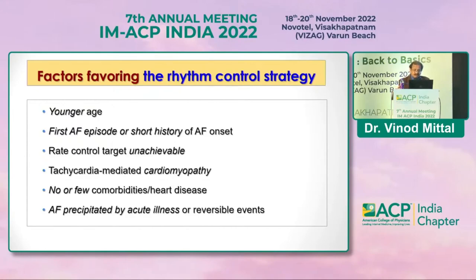Additional factors favoring rhythm control include: short history of AF, unachievable rate control target, tachycardia-mediated cardiomyopathy, few or no comorbidities, and AF precipitated by acute illness. In general, young patients with reversible causes are favorable candidates for rhythm control.